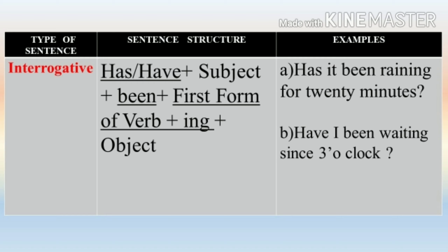Friends, please do remember ki agar aapko kisi bhi tense ka affirmative sentence ka rule yaad hai, to negative sentence ka rule aur interrogative sentence ka rule aap khud bana sakte hain. Jaise ki negative sentence mein hum kya karte hain — hum apne helping verb ke baad not ko add kar dete hain. Similarly, kisi bhi sentence ka interrogative banate waqt hum apne helping verb ko apne subject se pehle likh dete hain.